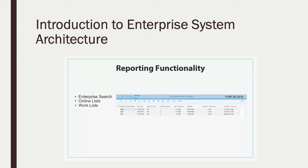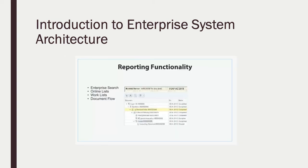S4/HANA provides powerful enterprise functions. Online lists enable users to display items associated with a business process. For example, in the fulfillment business process, it could display quotations, sales orders, deliveries, and invoices. Another type of list available is an interactive report for work yet to be completed in the business process.